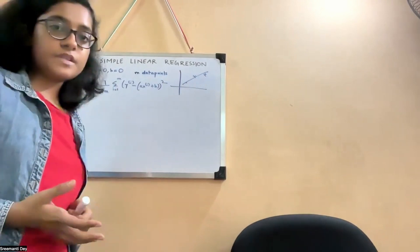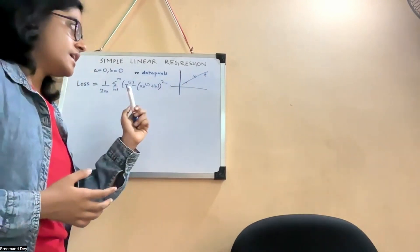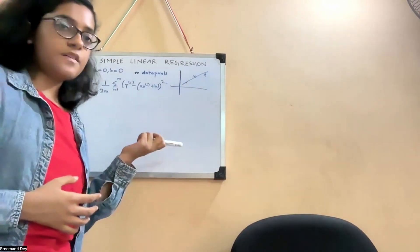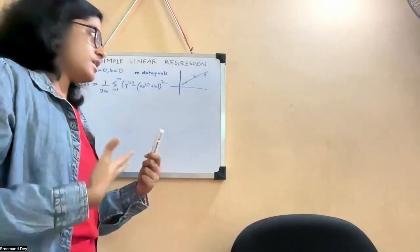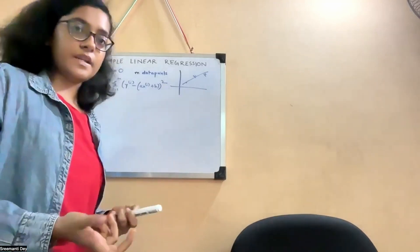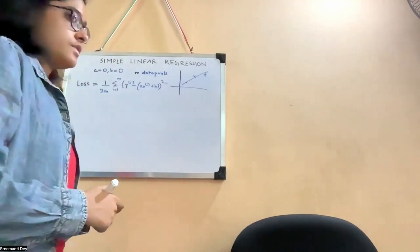Our target is to minimize this loss so that we can get this line that is closest to all the points. And so what is the purpose of this line? Once we have this line, regardless of whatever value of x we have, we can get the value of y without any effort. We just need to put the value of x in this equation and we will get the value. We can predict the value easily.